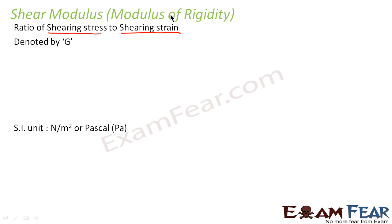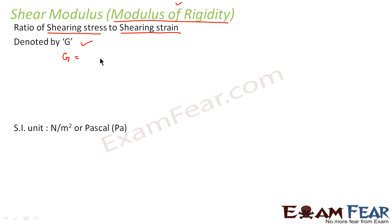It is also known as modulus of rigidity and is generally denoted by capital G. Just as Young's modulus is denoted by capital Y, similarly shear modulus is denoted by capital G. So we can say G is equal to shearing stress divided by shearing strain.